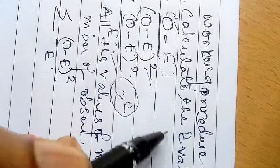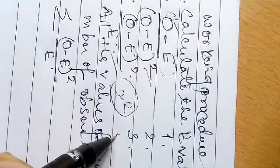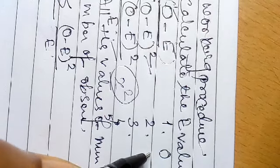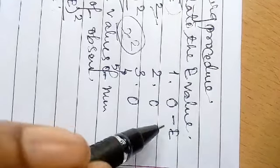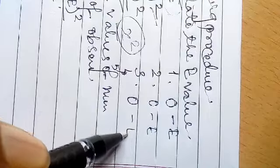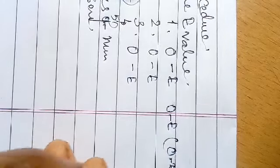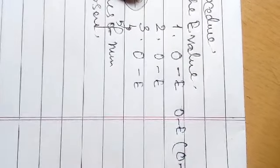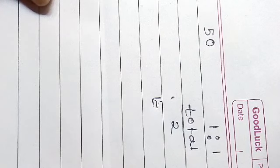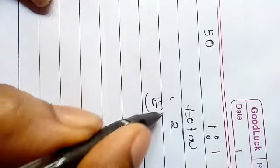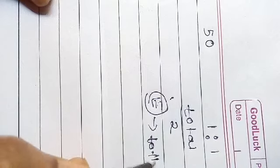Consider if five sets of observations are given. The observed values are already provided, so first find the expected values. The expected value is determined from the total size of the sample. If the hypothesis is a 1:1 ratio, the total is divided into 2 equal halves. If the hypothesis is a 3:1 ratio, the total is divided into three-fourths and one-fourth.